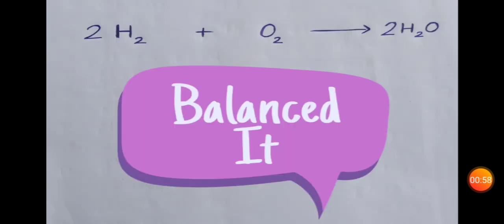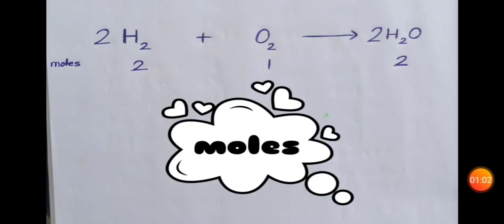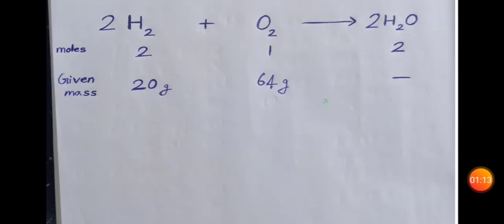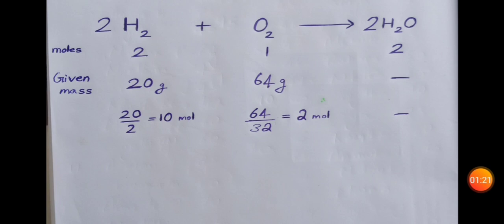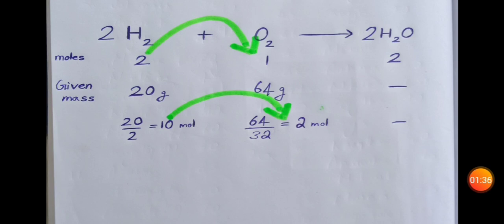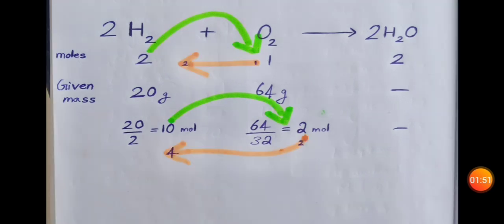The balanced reaction is: 2H₂ + O₂ → 2H₂O. Now, the reactants are reacting in the ratio given by the balanced equation — the ratio of 2H₂ to O₂ to 2H₂O.